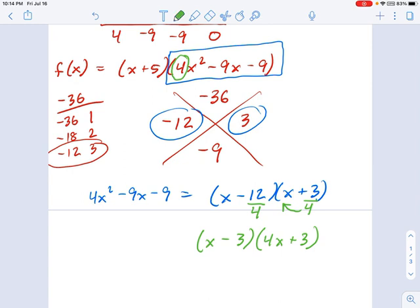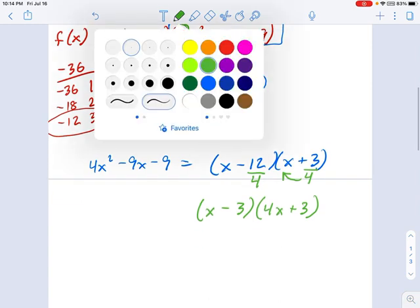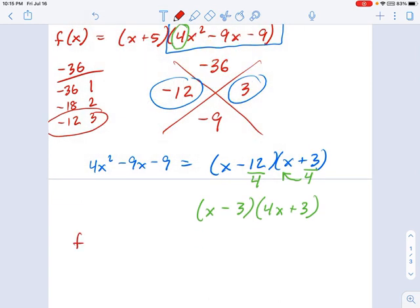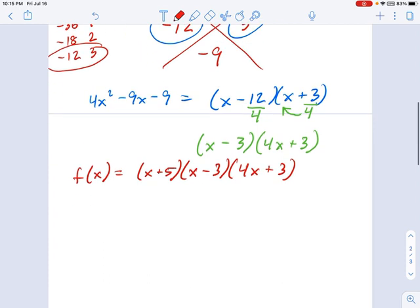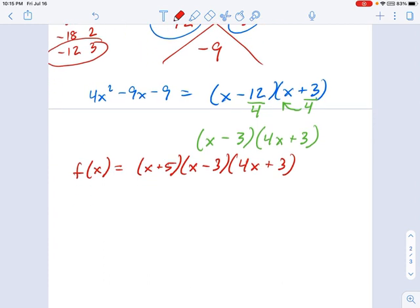Remember that x plus 5 I told you not to forget? Well, let's just bring that back in here. f(x) equals x plus 5 times this new factored bit we just found here, x minus 3, and 4x plus 3. That's the fully factored polynomial. And believe me, it was easier doing this part with the big X than it would have been with synthetic division again, because we didn't know what the rest of the factors were. We'll get to that later in the next lesson.